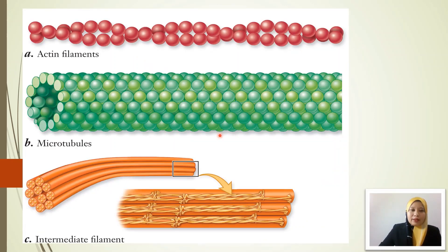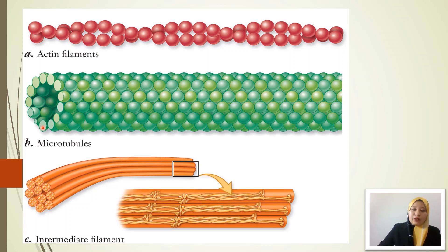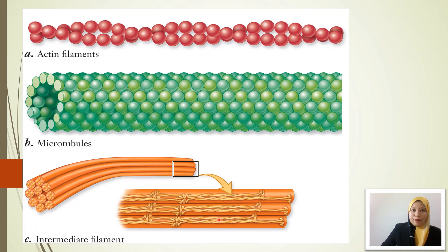In terms of subunits, the actin filaments have subunits arranged in a twisted form. For microtubules, the subunits are arranged to form a hollow tube. For intermediate filaments, they consist of keratin subunits, and this is the arrangement of those subunits in intermediate filaments.